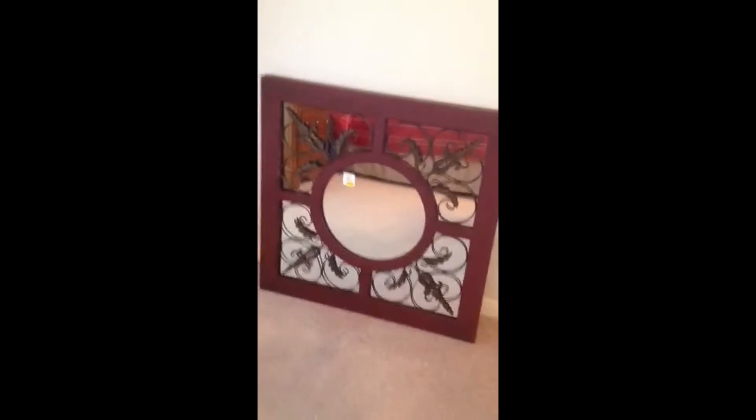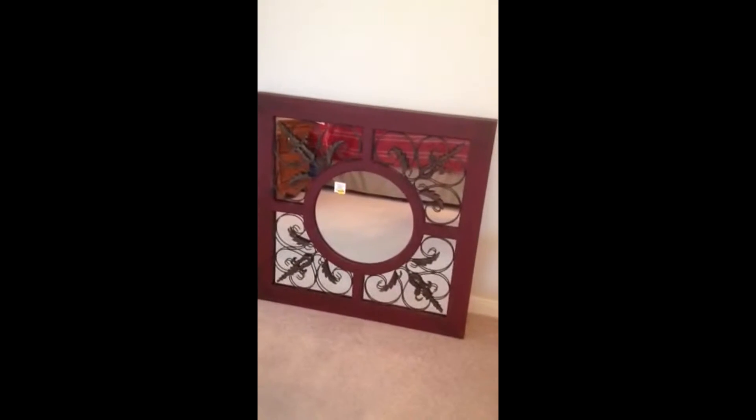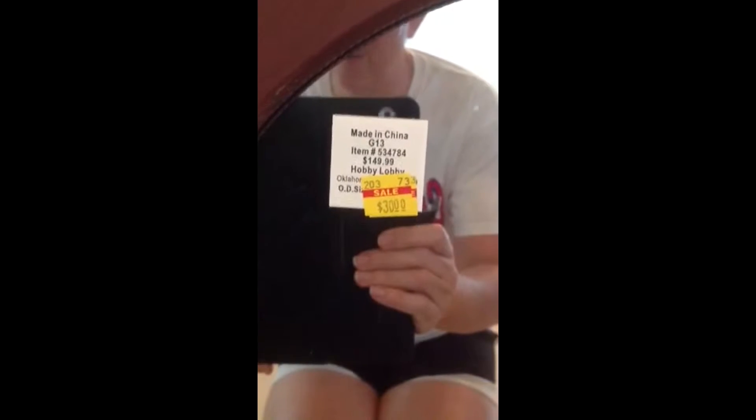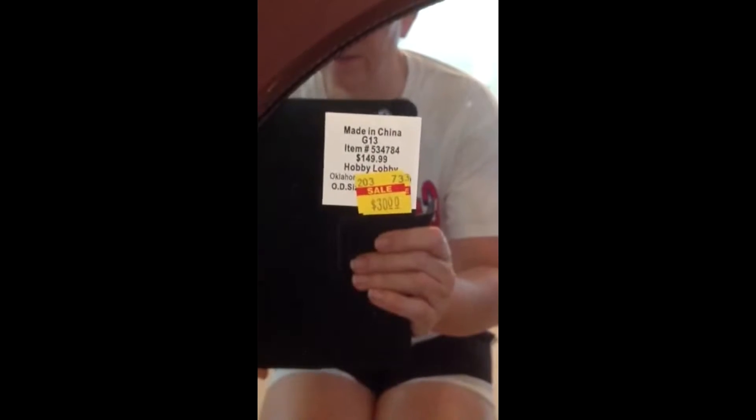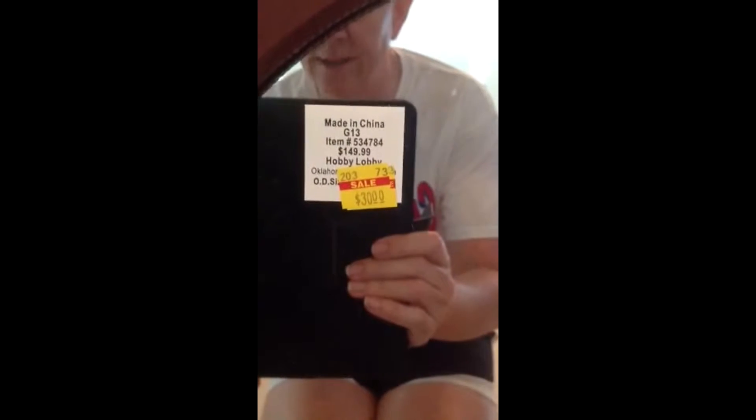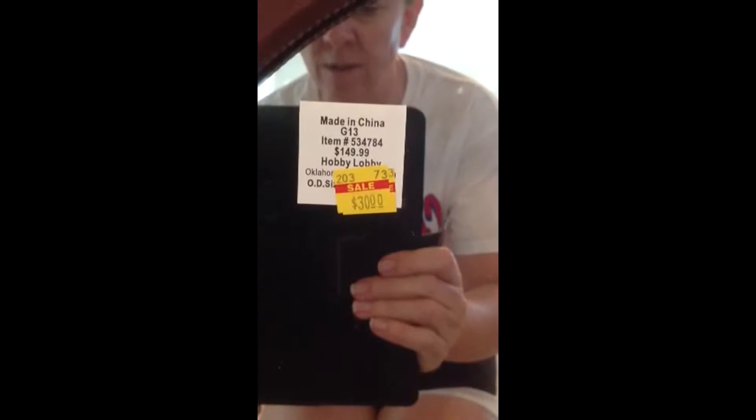So I'm at Hobby Lobby the other day, and I find this really cool wall hanging, and it was on super sale. You see that price? Made in China. It was originally $149.99, let's call it $150, on sale for 30 bucks. Wow! Can you tell me what my percentage discount I got on that? We call it a sale price or discount price. What was my discount?